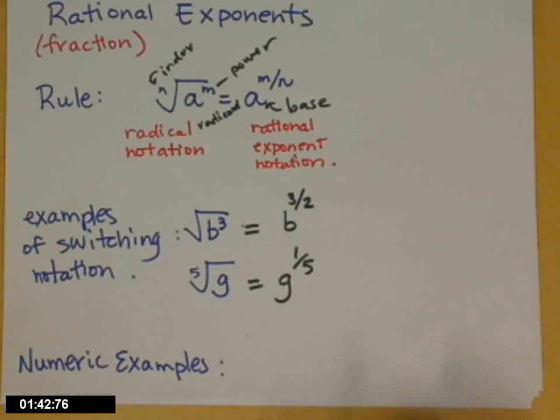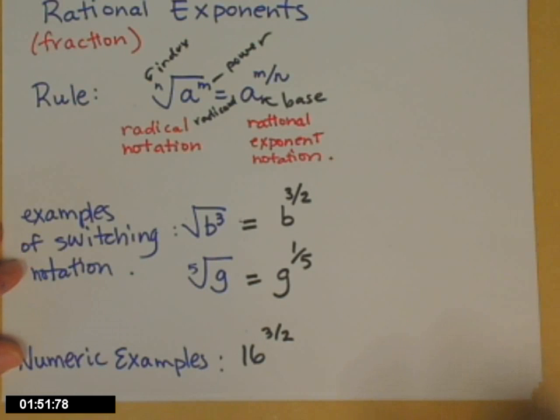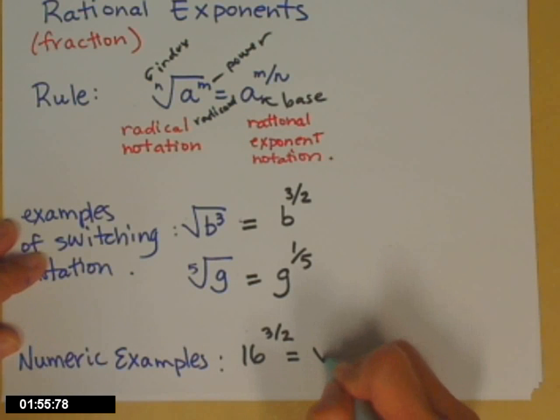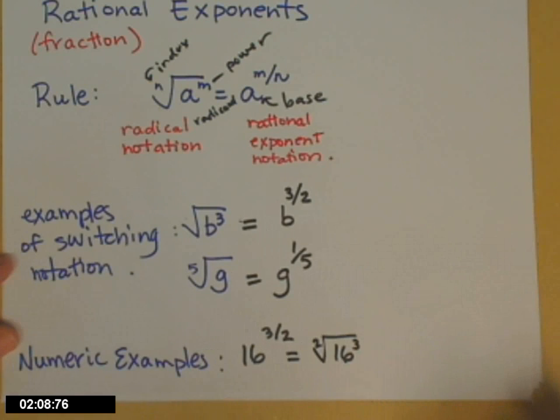So just to show you two numeric examples, if I have 16 to the three-halves power, I'm not sure what that is just looking at it. Instead, I need to convert it to radical notation. So I'm going to go the other way, I'm going to go to radical notation. 16 is my radicand, its power is a three, and the index is two.